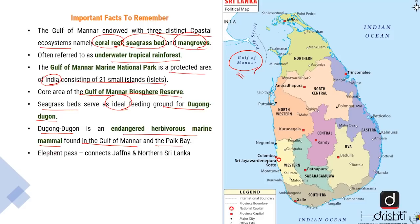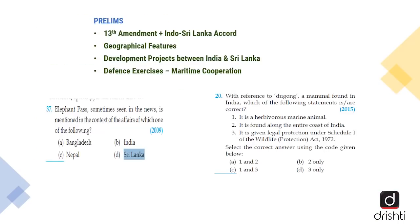An important fact to remember is the Elephant Pass, which connects Jaffna and the northern part of Sri Lanka or the northern province. With this, we have concluded the key concepts and key points to be learned from the editorial. Now let us look at it from the UPSC perspective.